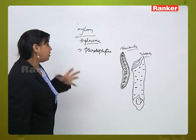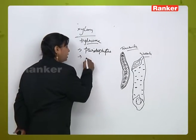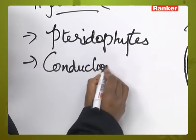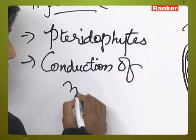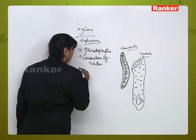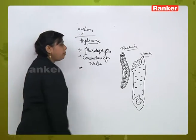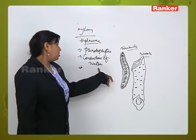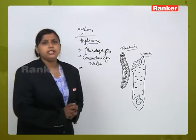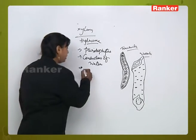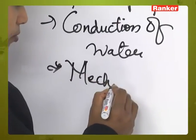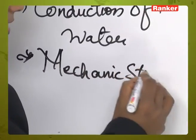What is the basic function of xylem? It is useful for the conduction of water. In addition to conduction of water, it also helps in the mechanical strength of the plant body. Provides the mechanical strength.